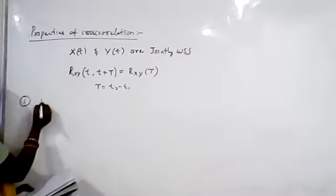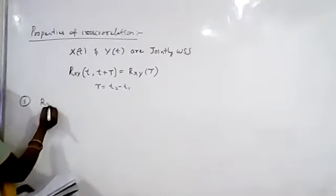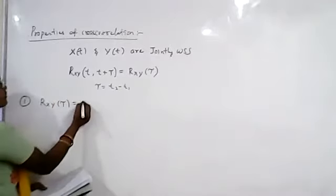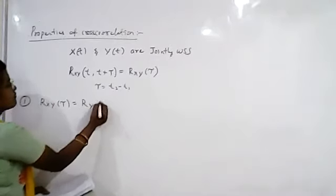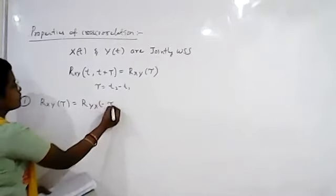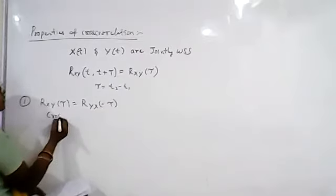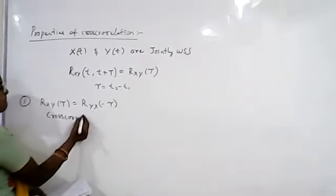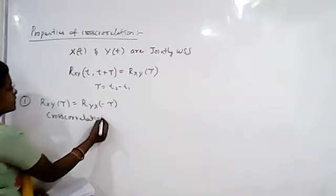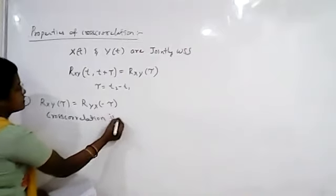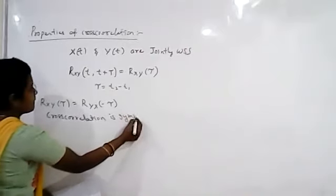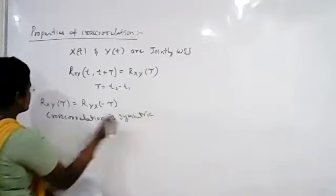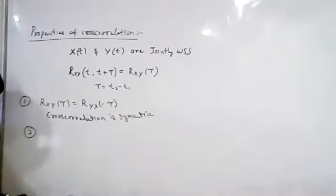The first property is: rxy(τ) = ryx(-τ). It means that cross-correlation is symmetric. This is our first property.